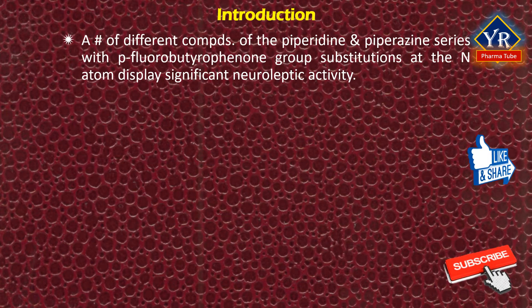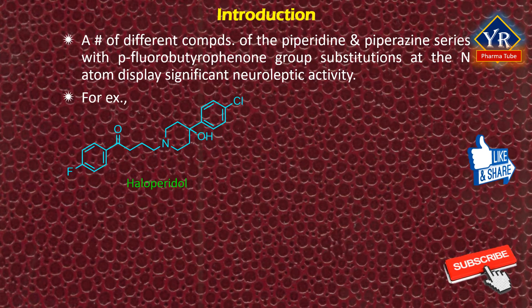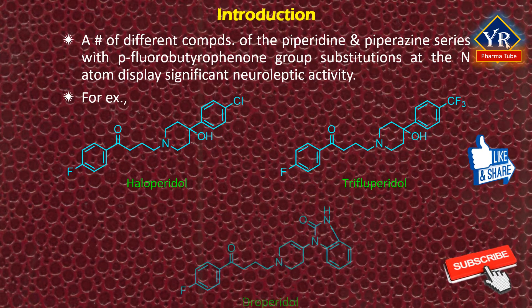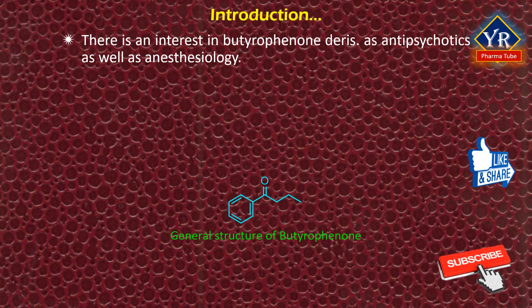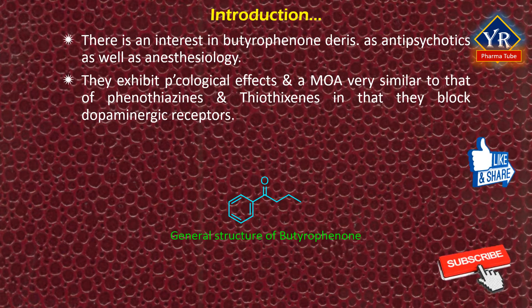A number of different compounds of the piperidine and piperazine series with parafluorobutyrophenone group substitutions at the nitrogen atom display significant neuroleptic activity — for example, haloperidol, trifluperidol, droperidol, etc. There is considerable interest in butyrophenone derivatives as antipsychotic agents as well as in anesthesiology. They exhibit pharmacological effects and mechanism of action very similar to that of phenothiazines and thiothixenes in that they block dopaminergic receptors.